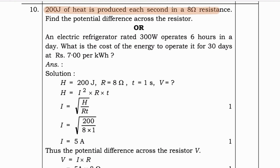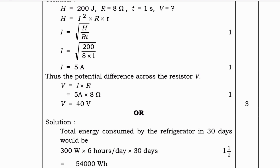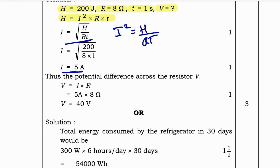Next question: 200 joules of heat is produced each second in an 8 ohm resistance. Find the potential difference across the resistor. Here heat H = 200 J, resistance R = 8 ohm, time t = 1 second. Using the formula H = I²Rt, we rearrange to find I. Substituting the given values, we get I = 5 ampere. Thus the potential difference V = IR = 5 × 8 = 40 volts.